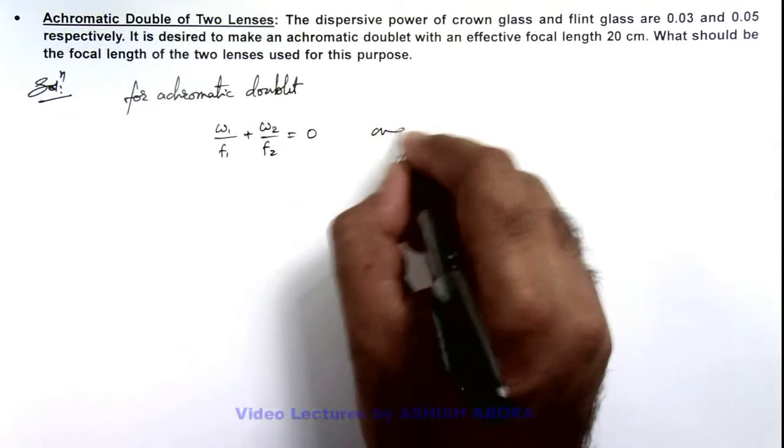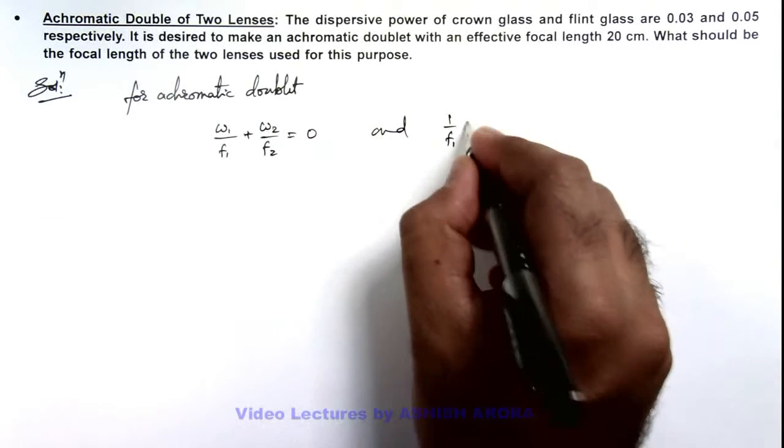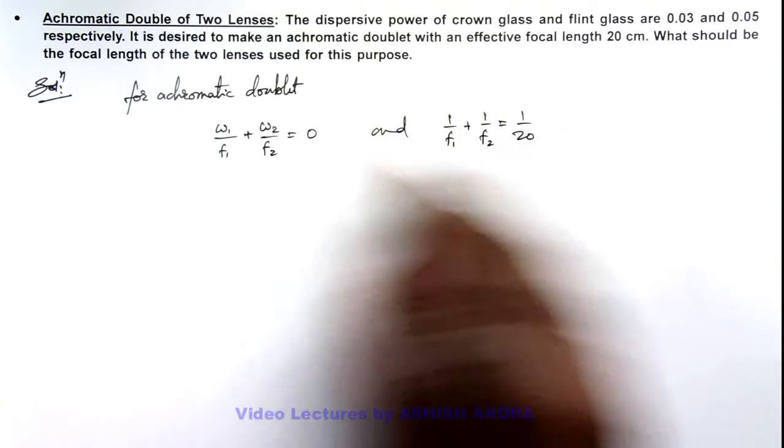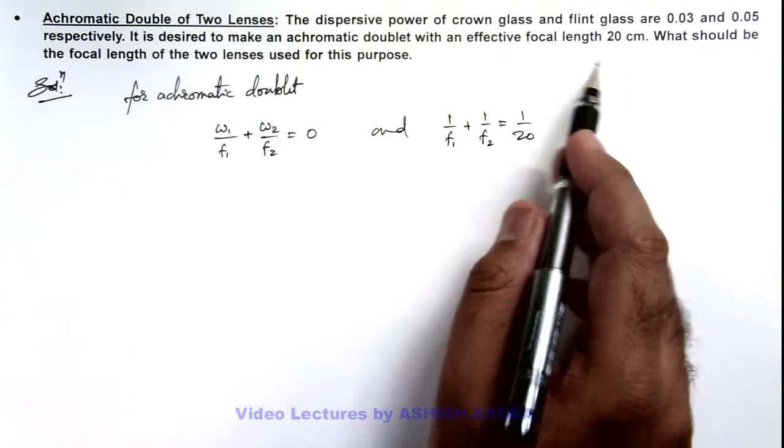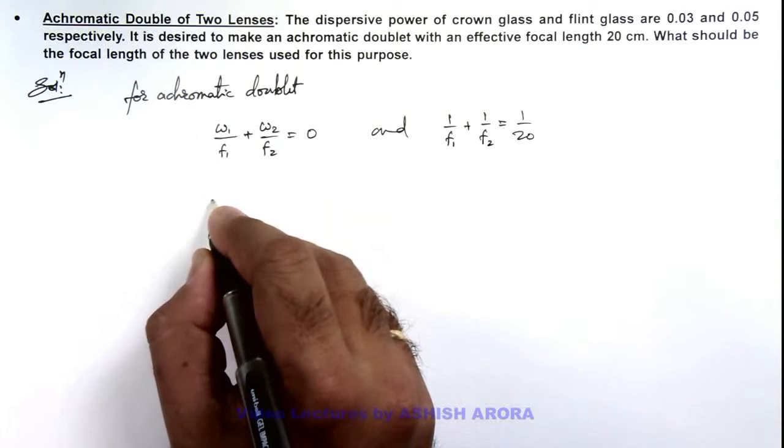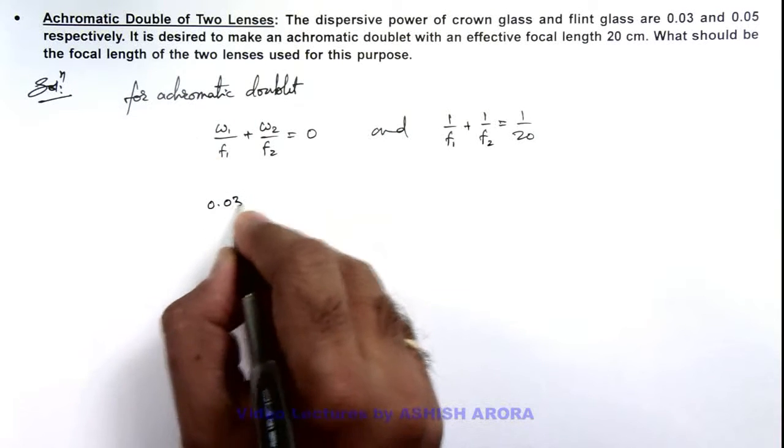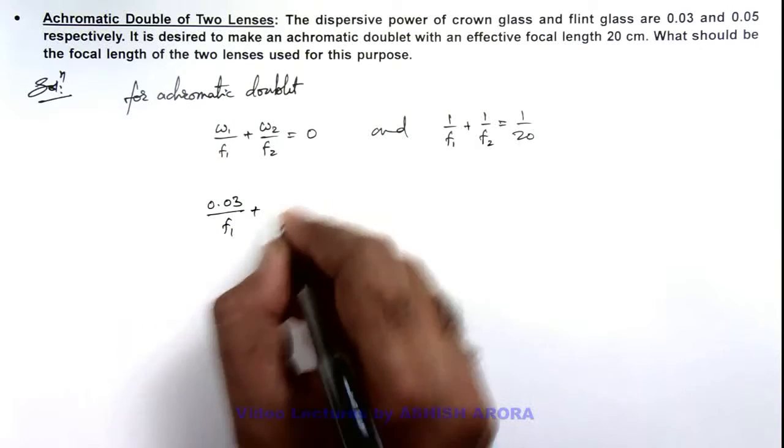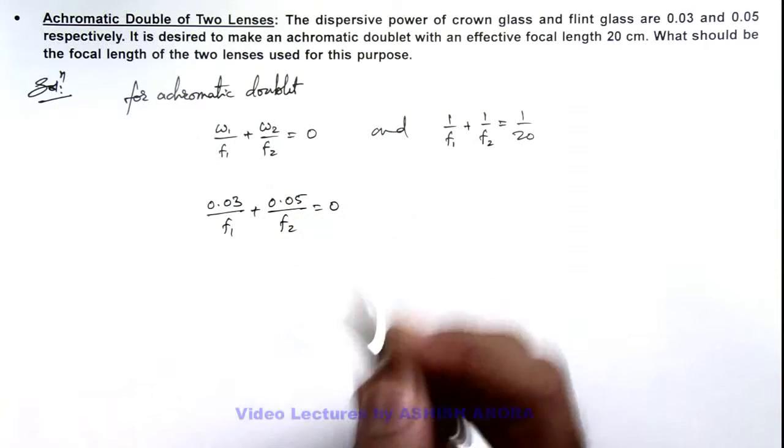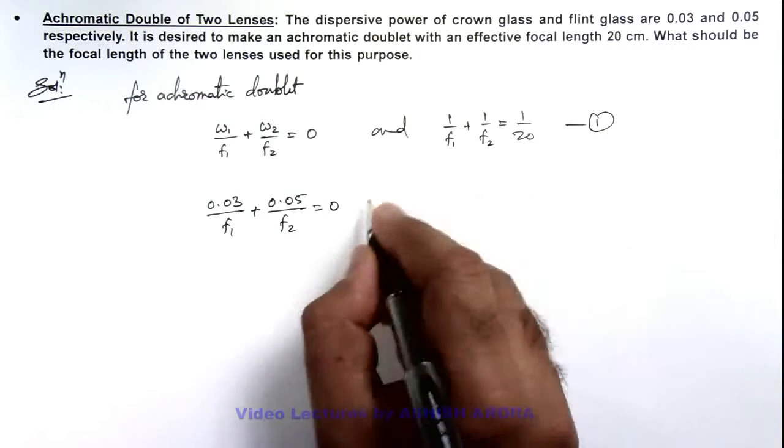And we are also given that 1 by f 1 plus 1 by f 2 is equal to 1 by 20, because the equivalent focal length of the two lens combination is this. We substitute the values of dispersive power: this is 0.03 by f 1 plus 0.05 by f 2 is equal to zero. So this is our equation 1 and this equation 2.